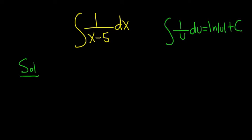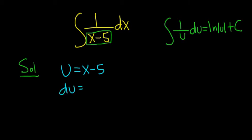So in this case, it's almost that way. It would be really nice if instead of x minus 5, this was u. So what we do is we call it u — we make what's called a u substitution. We let u be equal to x minus 5. Then we take the derivative of both sides: du equals dx, since the derivative of x is dx and the derivative of 5 is 0.